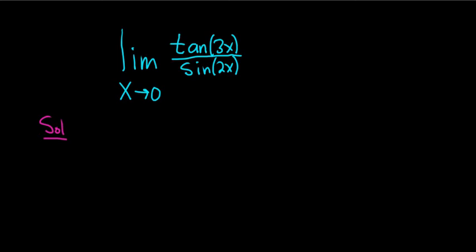When you're taking a limit, the first thing you should do is take the number here and plug it in for all of the x's. So when we do that, we get the tangent of 3 times 0, so tangent of 0.